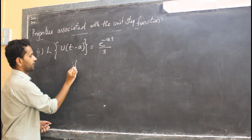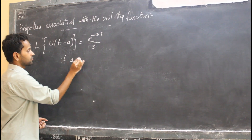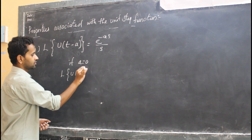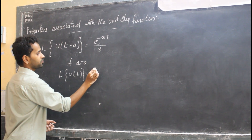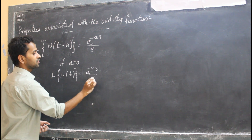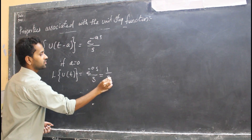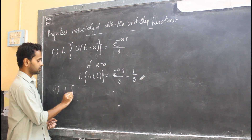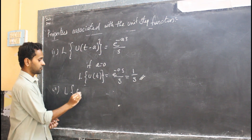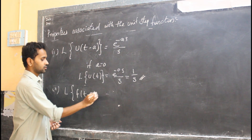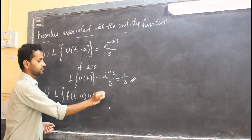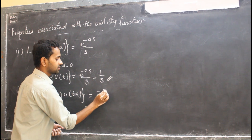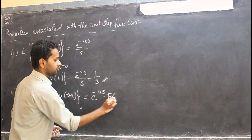If a equals 0, the Laplace transform of u(t) becomes e^(−0·s) divided by s, which simplifies to 1/s. Also, the Laplace transform of f(t − a) equals e^(−as) times F(s).